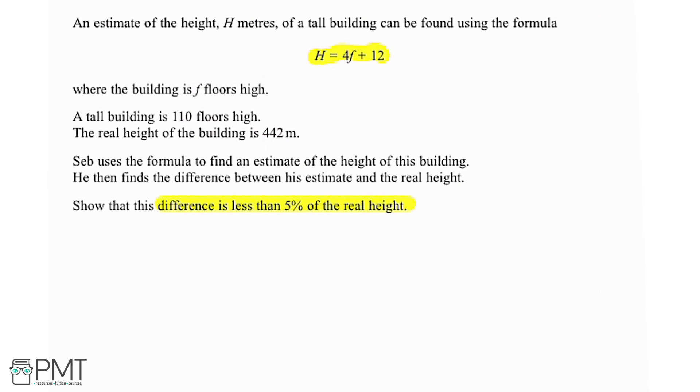So we're first going to imagine that we're Seb, and we're going to use the formula to find the estimate that Seb would have got. The building is 110 floors high, and f in the formula is the amount of floors, so we can replace f with 110.